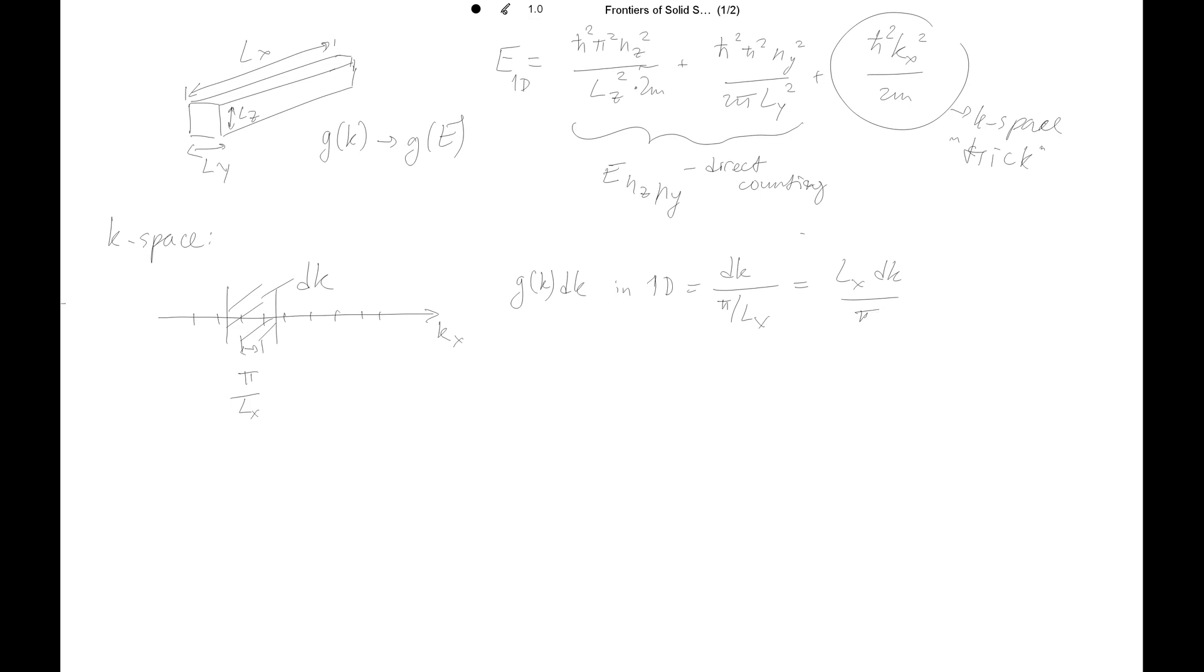The dispersion relation we can then rewrite. Let's move the direct counting parts to the left-hand side. E minus Enz,ny equals ℏ²kx²/2m.